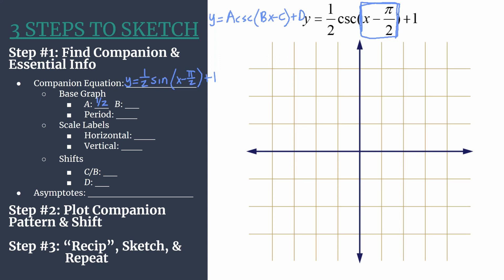The value b is the coefficient of x, and there's nothing there so it's an understood one. That tells us one cycle should happen between zero and two pi. We calculate the period as two pi over b, so two pi over one — the period is two pi. For the horizontal axis scale, take the period and divide by four: two pi over four gives pi over two. For the vertical scale, one will work well given our a value of one half.